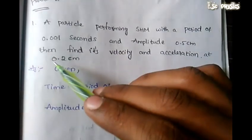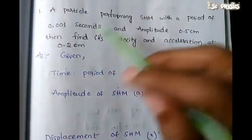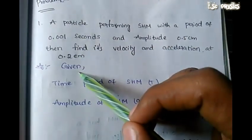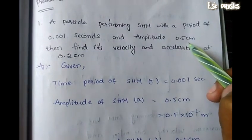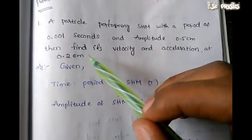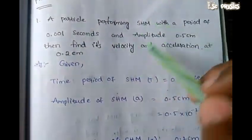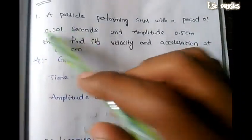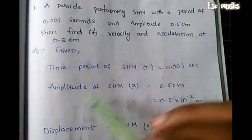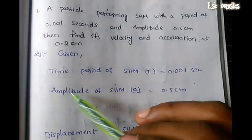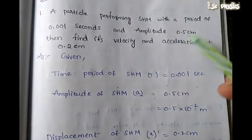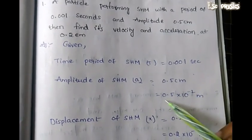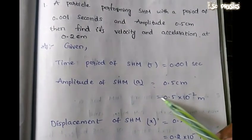So here we can bring the displacement. Given: the time period of SHM is T equals 0.001 seconds. The amplitude of SHM is A, and the amplitude is 0.5 cm.